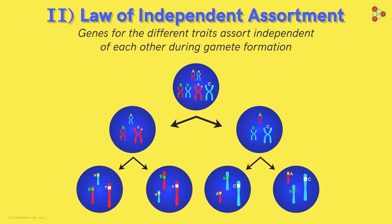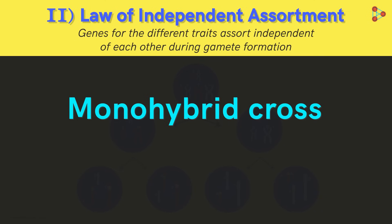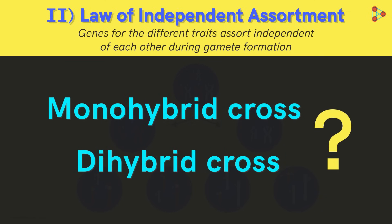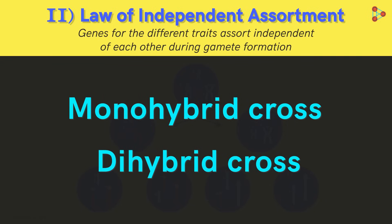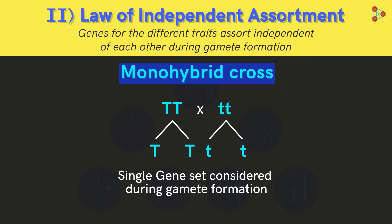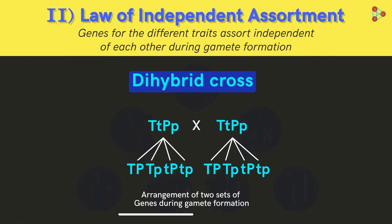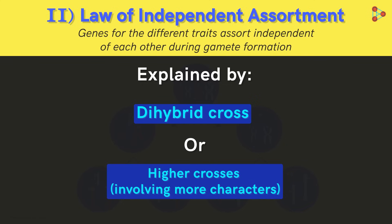There can be more possibilities of obtaining different combinations depending on how the chromosomes align on the metaphase plate. Which type of cross will help us understand this law better — a monohybrid cross or a dihybrid cross? If it is a monohybrid cross, there will be no independent assortment because we are considering only one character at a time, dealing with a single gene set. This law is best understood when more than one character is studied at a time — that is, a dihybrid cross or higher crosses involving more characters.